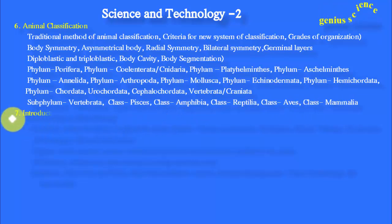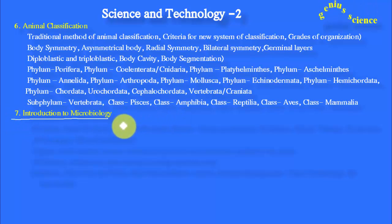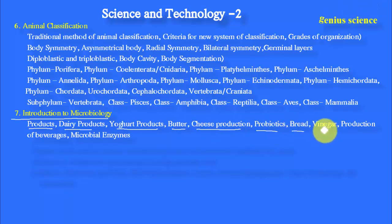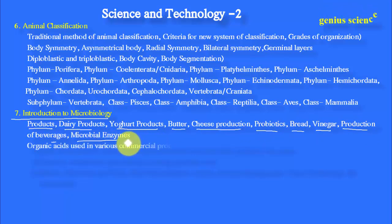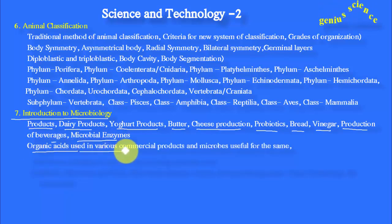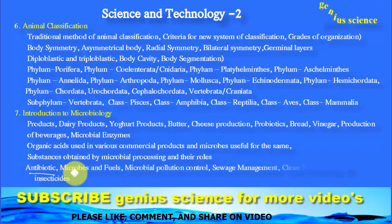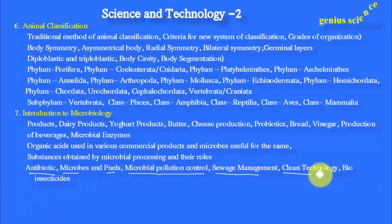From the seventh chapter, Introduction to Microbiology, important topics include Dairy Products — Yogurt, Butter, Cheese Production — Probiotics, Bread, Vinegar, Production of Beverages, and Microbial Enzymes. Organic Acids used in various commercial products and Microbes useful for the same are important. Also: Substances Obtained by Microbial Processing and their Roles, Antibiotics, Microbial Fuels, Microbial Pollution Control, Sewage Management, Clean Technology, and Bio-Insecticides.